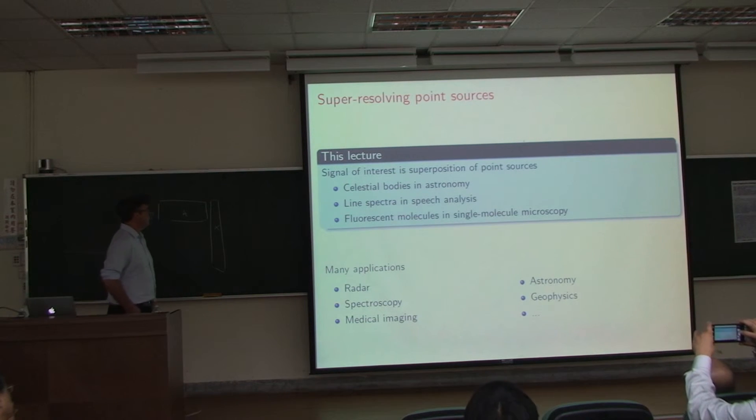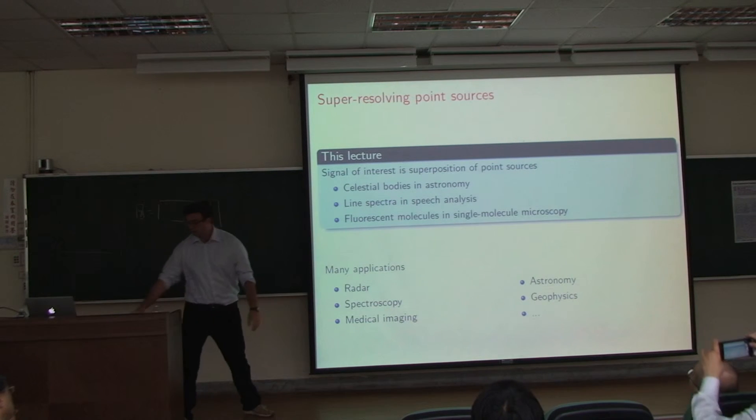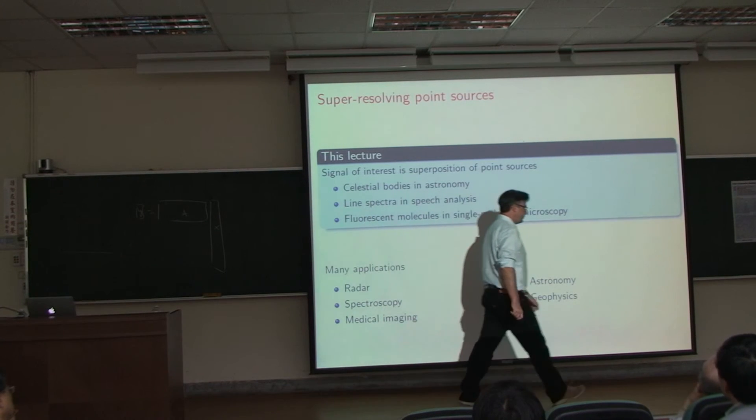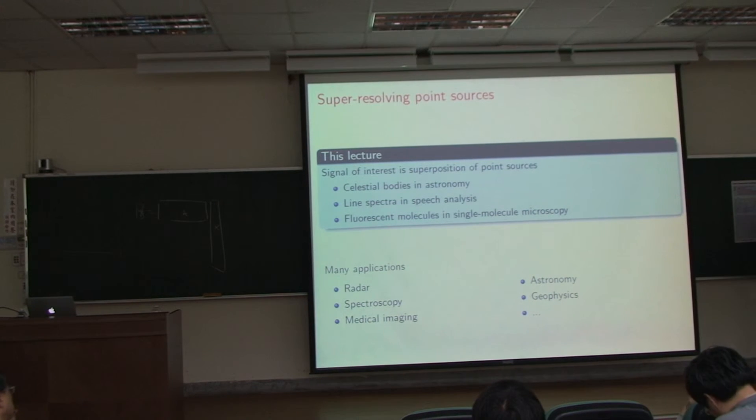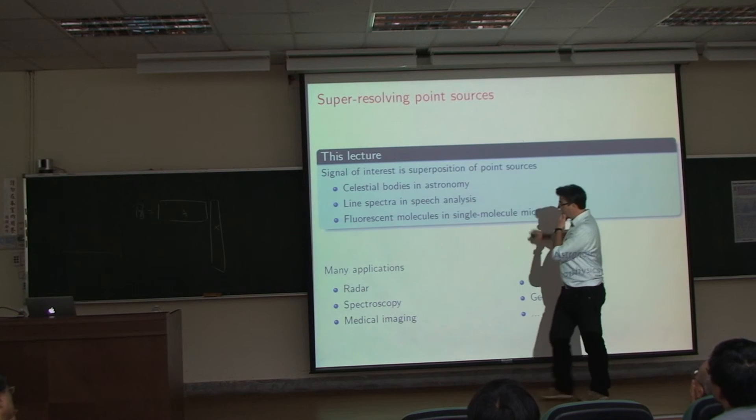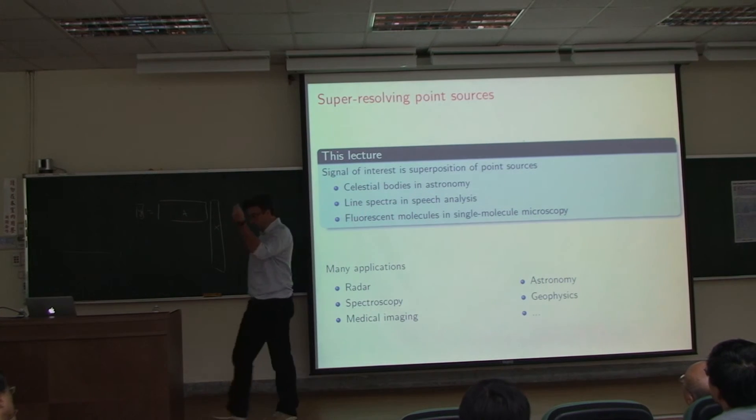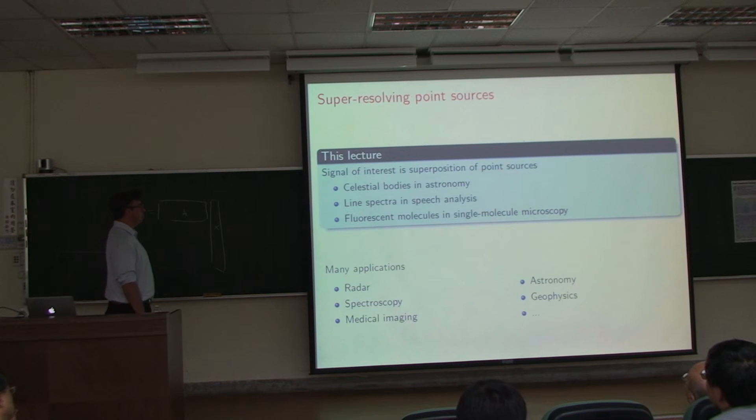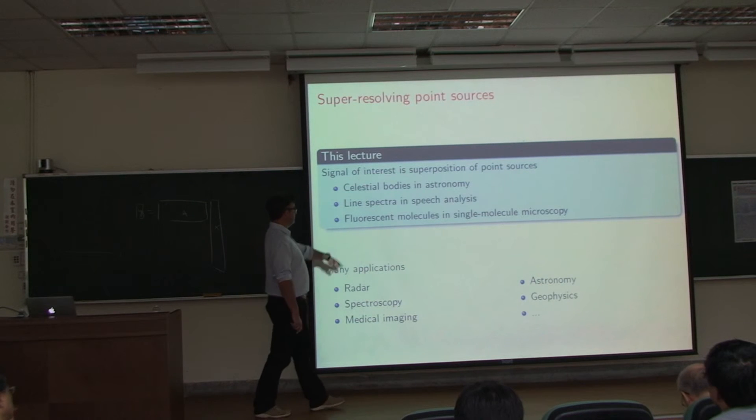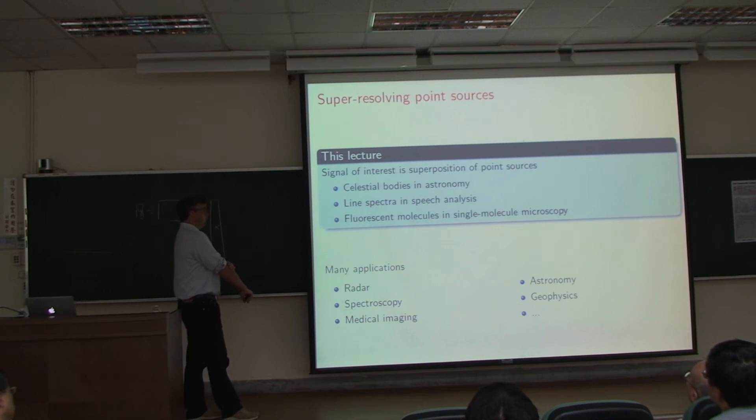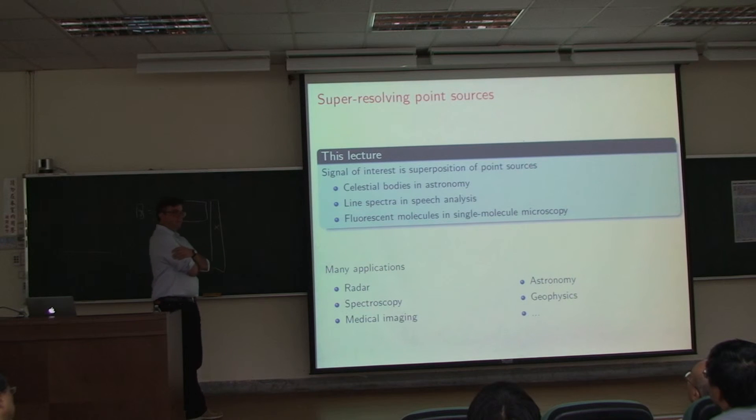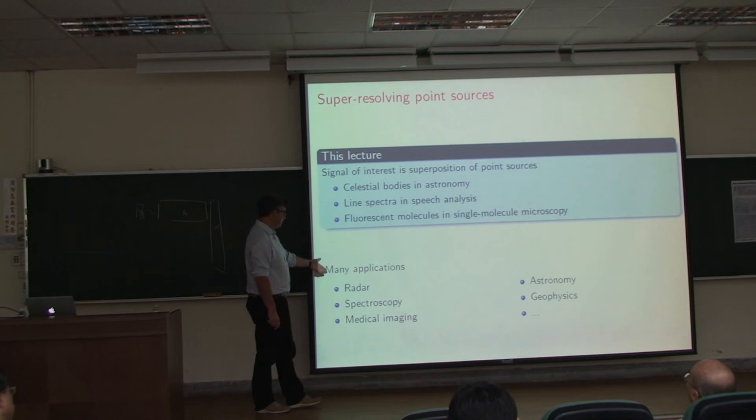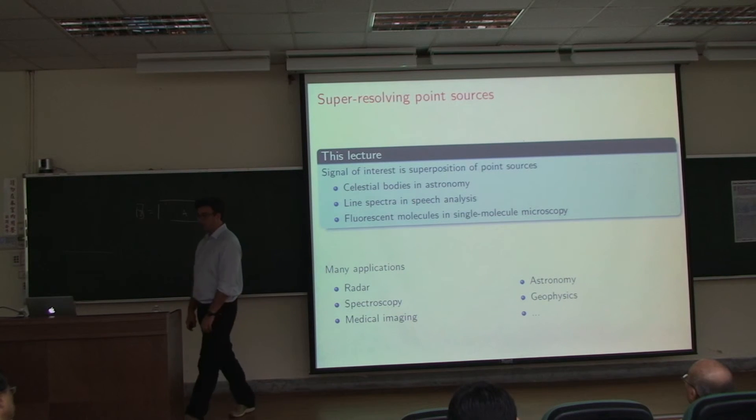In this lecture, we're going to try to super-resolve signals that are sparse. The signals of interest are sparse superpositions of point sources, something that looks like this. We're interested in an object that is a superposition of point sources. This is motivated by applications like single-molecule imaging, because here we really have point sources, or locating very precisely celestial bodies in astronomy, like stars, to test cosmological models. It's the same problem as spectral analysis. We're going to focus on the recovery of sparse structures like this from extremely low-pass data, a problem occurring in radar, spectroscopy, astronomy, geophysics, and many other areas.